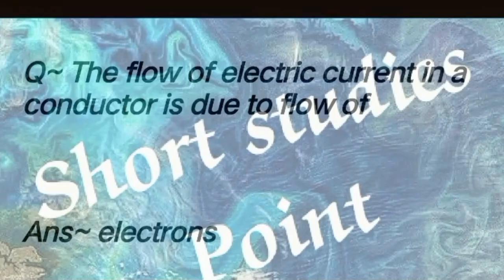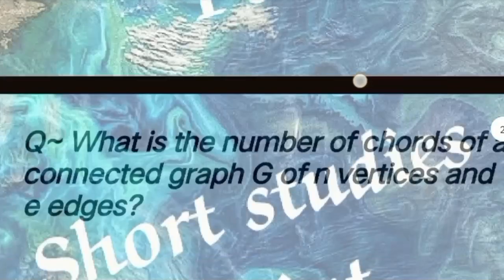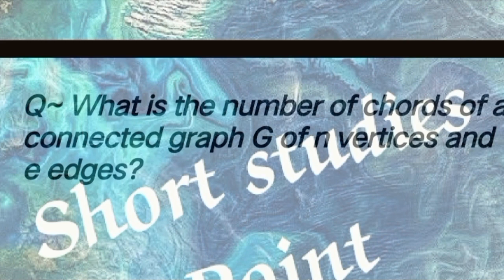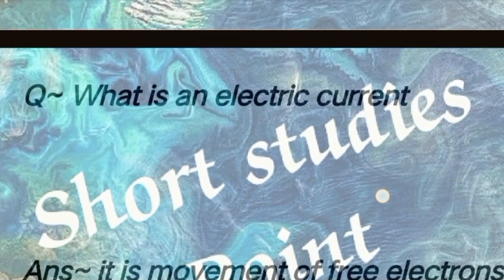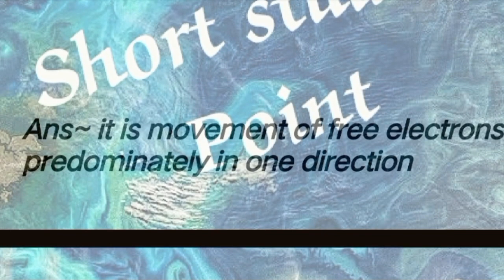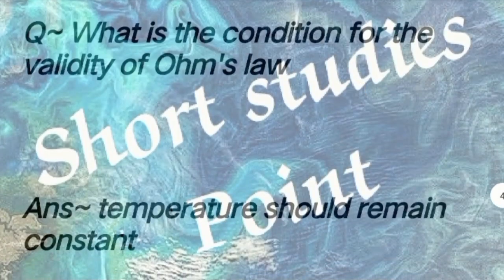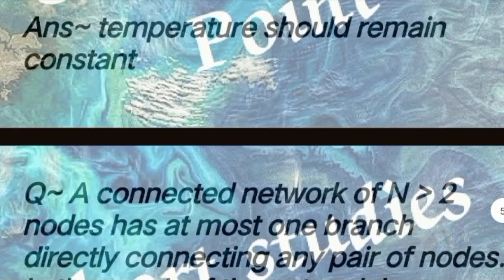Question: The flow of electric current in a conductor is due to the flow of answer: electrons. Next question: What is the number of chords of a connected graph G of n vertices and e edges? Answer: e minus n plus one. Next question: What is electric current? Answer: It is a movement of free electrons predominantly in one direction.